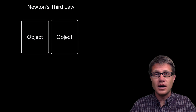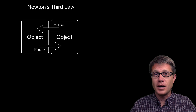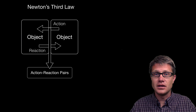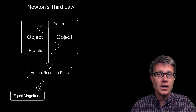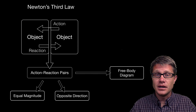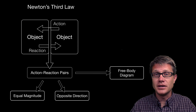According to Newton's third law, if an object exerts a force on another object, then that other object is going to exert an opposite and equal force on the first object. We call these action-reaction pairs, and they will always be equal in magnitude and opposite in direction. These are sometimes hard to identify, so you can use a free body diagram to identify where those forces are and figure out the overall acceleration.